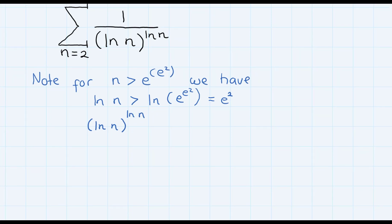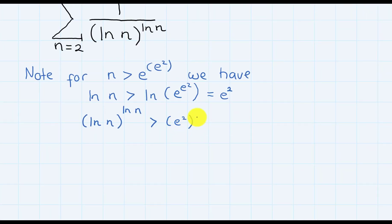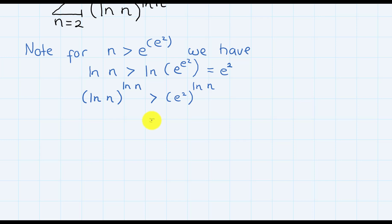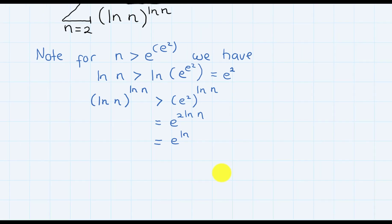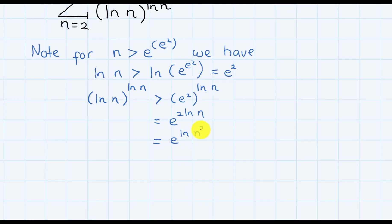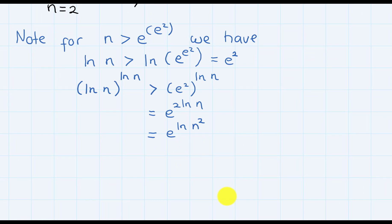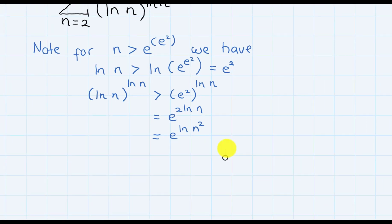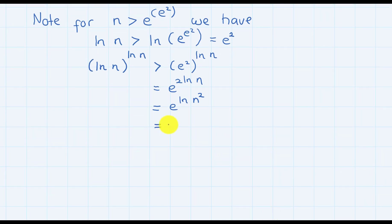Now if we take (ln n) raised to the power of ln n, it is greater than (e²) raised to the power of ln n. But what is the right hand side? Can we simplify it? It is equal to e to the power of 2 ln n, which equals e to the ln n squared, but this is nothing but n squared. So now we know that for n bigger than that number, we have this inequality: (ln n)^(ln n) is greater than n².